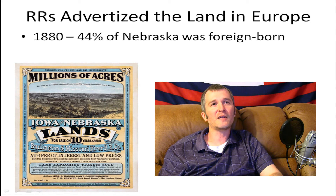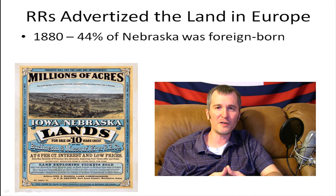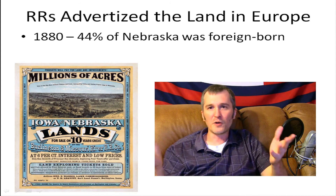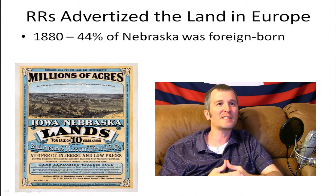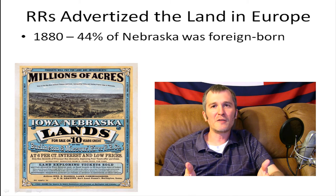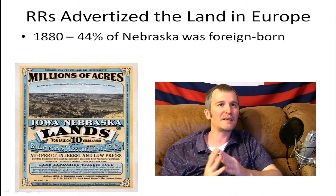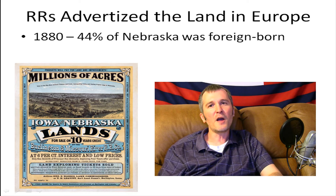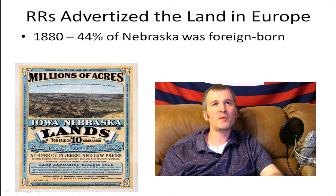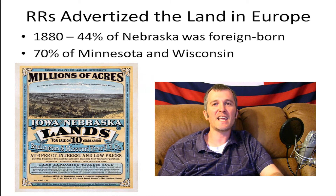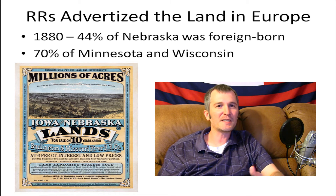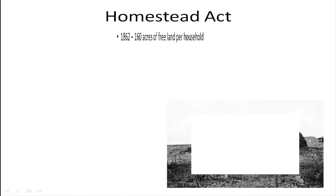The railroads advertised the land they were selling in European newspapers. The poor class in Europe, who could not dream of owning land there — Europe had evolved out of the feudal system where the peasant class couldn't own land — sold everything they could, packed their few possessions, and came right over. Amazing statistics from 1880: 44% of people living in Nebraska were foreign born, and 70% of people living in Minnesota and Wisconsin were foreign born. These immigrants came over to make a new life in America — this is the American dream, and that's how we filled up that section of the country.